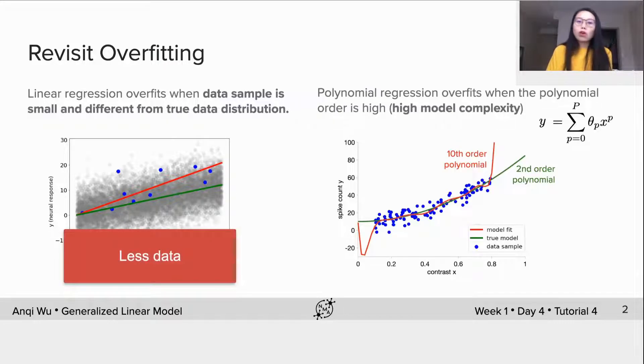Moreover, we also showed that in polynomial regression, when the polynomial order is high, which means high model complexity, the model could also overfit to the data, resulting in a bad estimate.